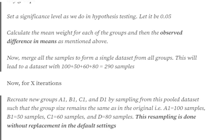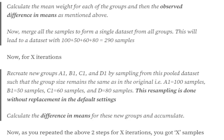Now we start the permutation testing. We take all samples from different groups and merge them together into a single pool — that's 100 + 50 + 60 + 80 = 290 samples total. We then run X iterations. In each iteration, we create four new groups A1, B1, C1, D1 — aliases for the original groups — with the same sample sizes (A1 gets 100, B1 gets 50, C1 gets 60, D1 gets 80), but samples are randomly picked from the pooled 290 samples.